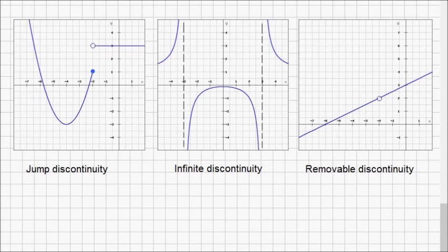We talked about continuity and what conditions must be met for a function to be continuous. Now, let's look at the types of discontinuities we will encounter. There are three types as you can see in this graph: jump discontinuity, infinite discontinuity, and removable discontinuity.